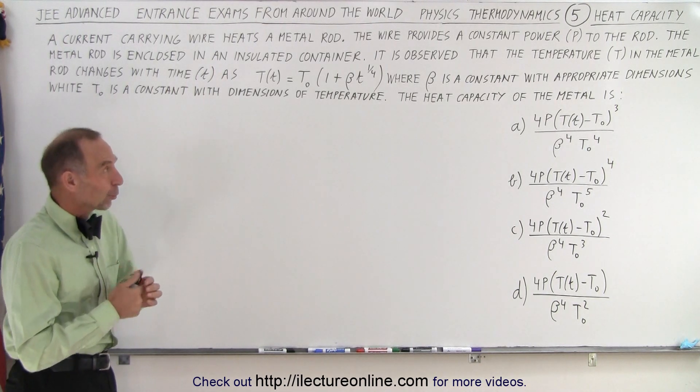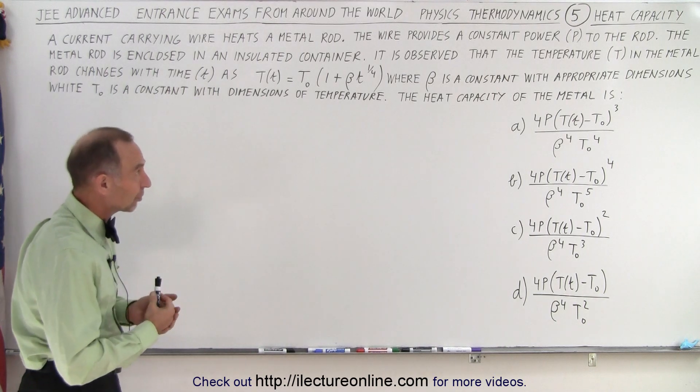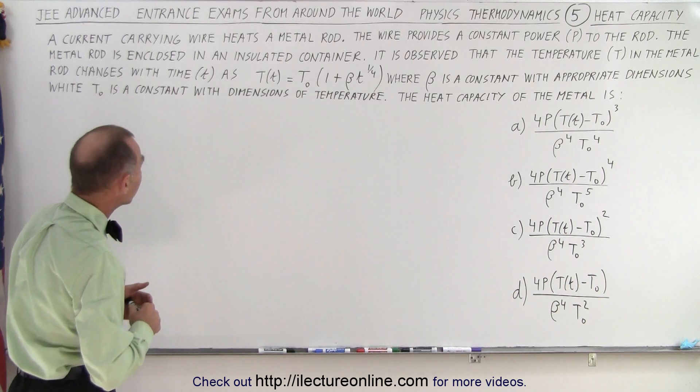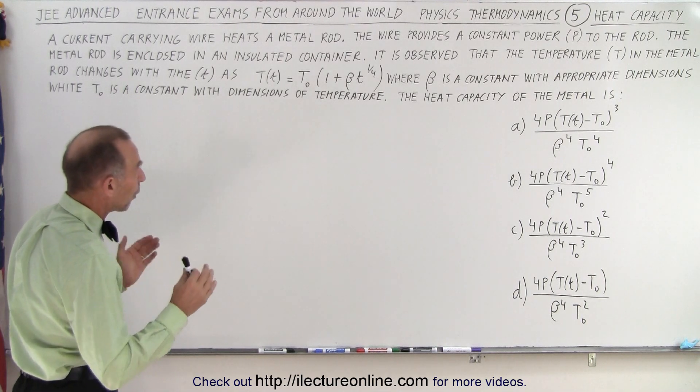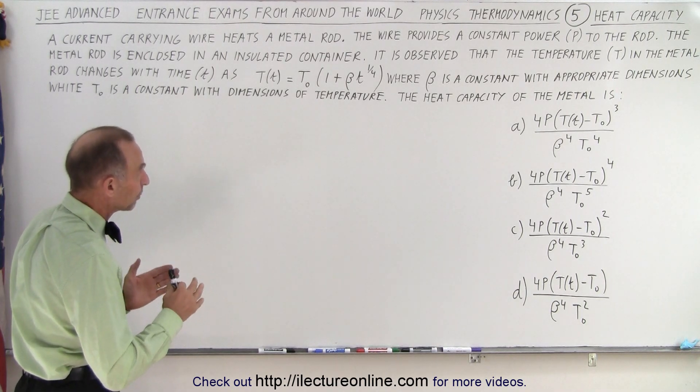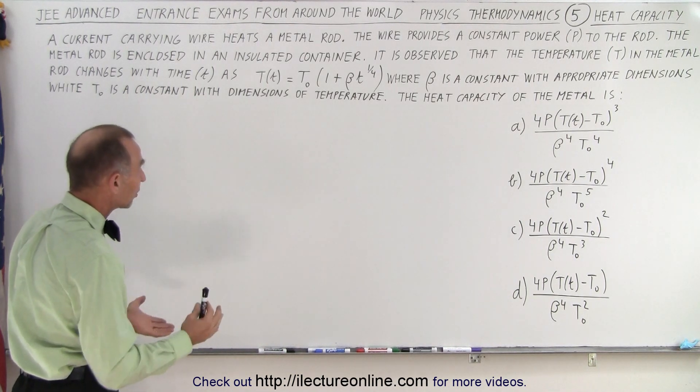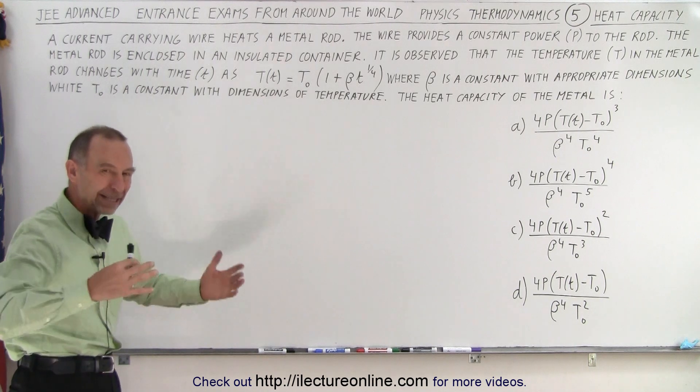And here's the question. It has to do with thermodynamics, with heat capacity particularly, and it says that a current carrying wire heats a metal rod. The wire provides a constant power P to the rod. The metal rod is enclosed in an insulated container assuming that no heat can escape.